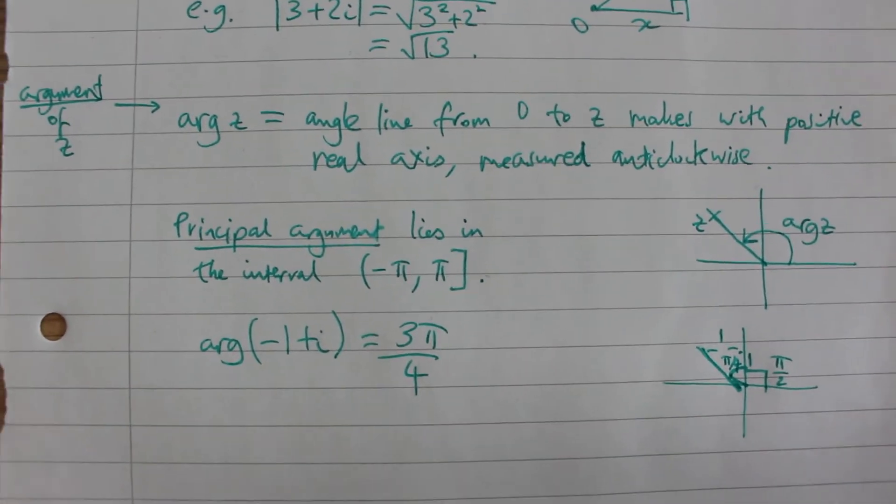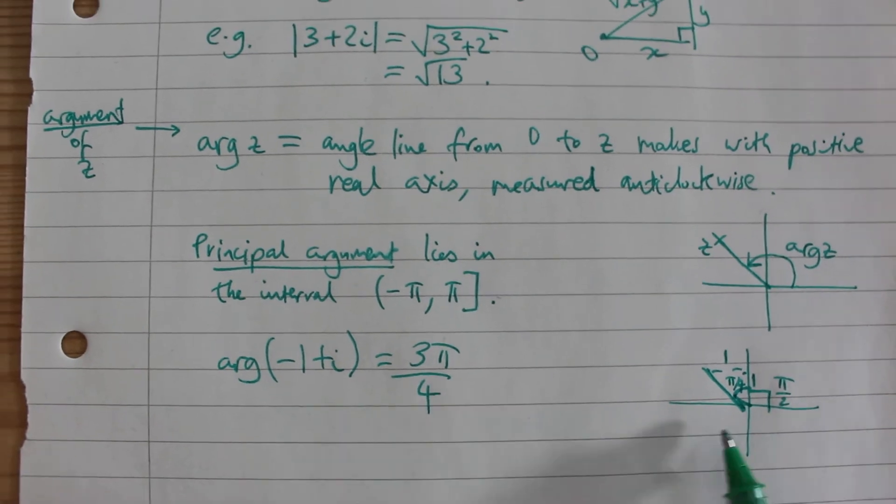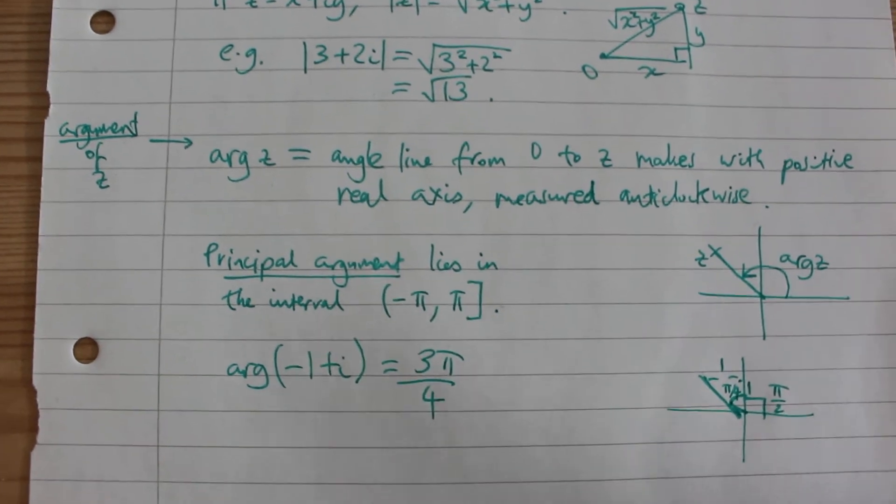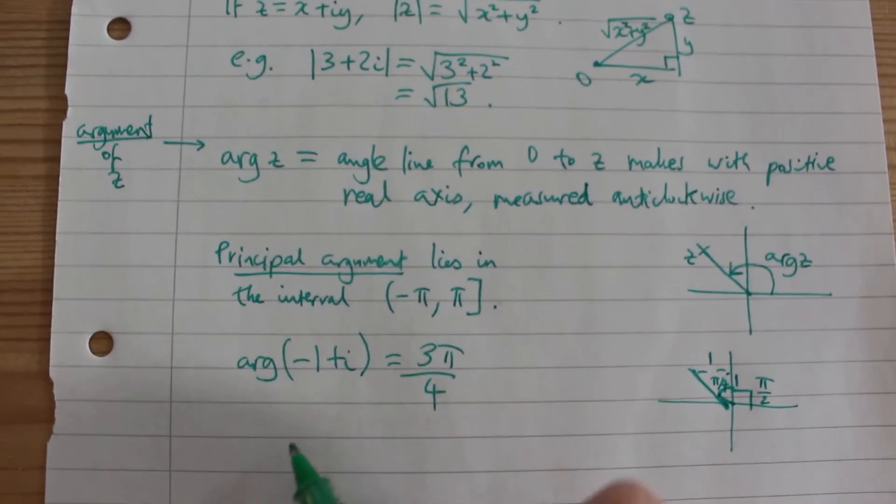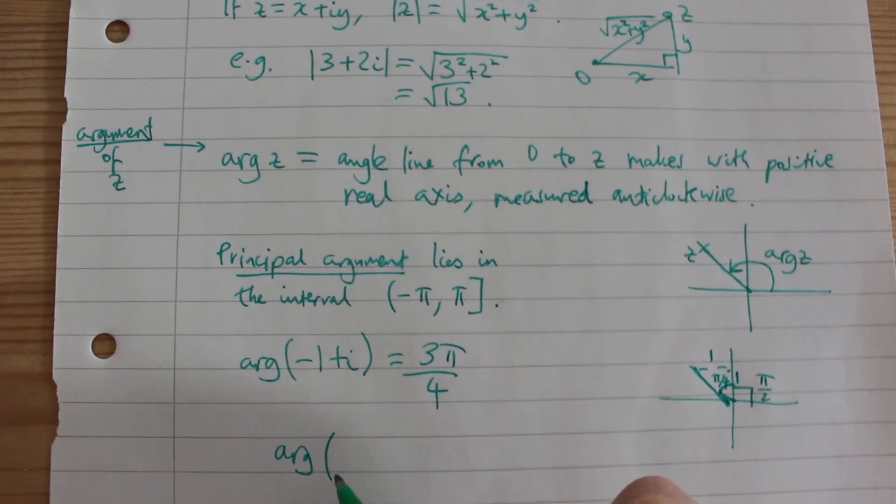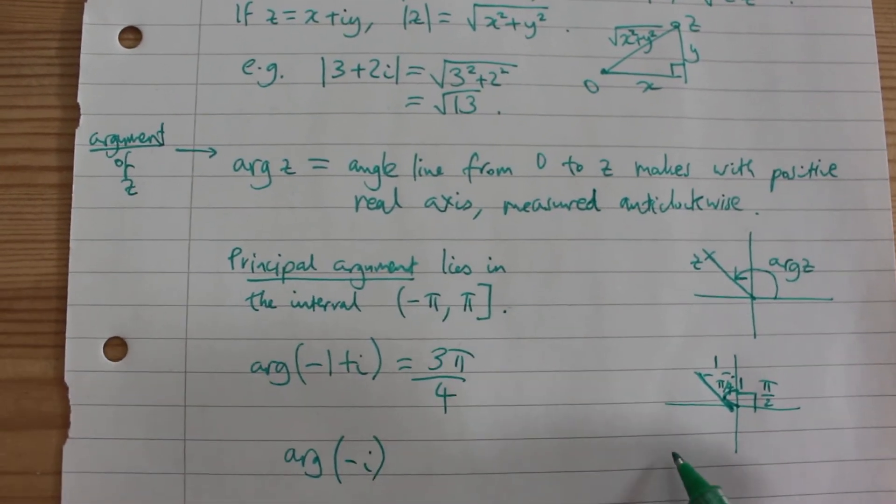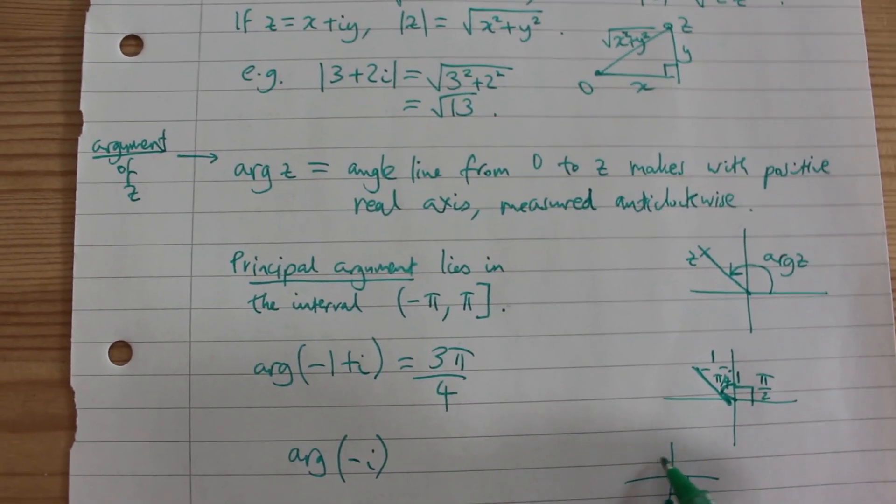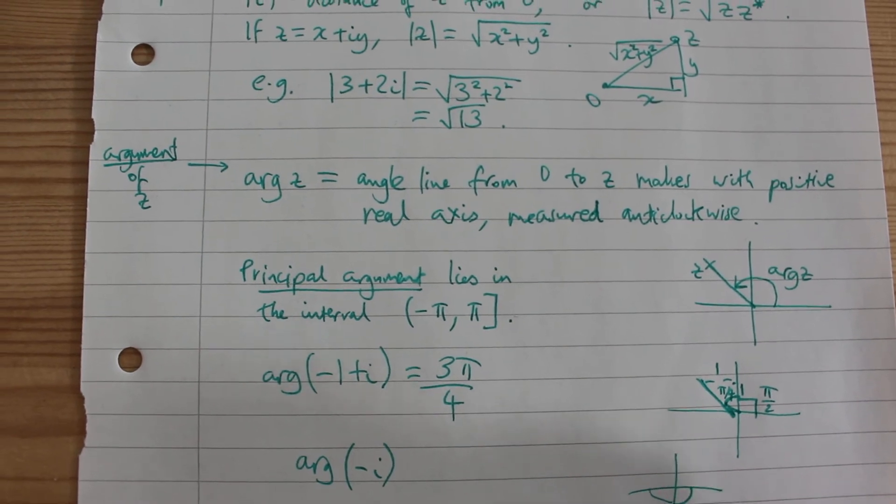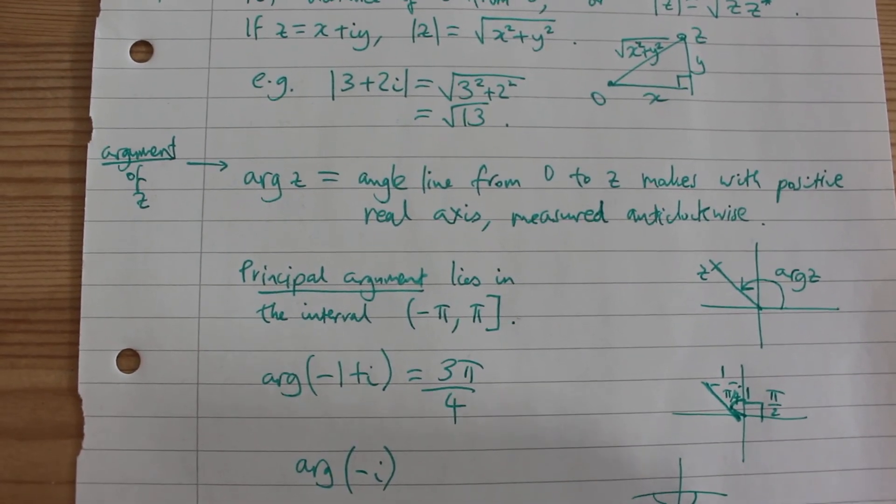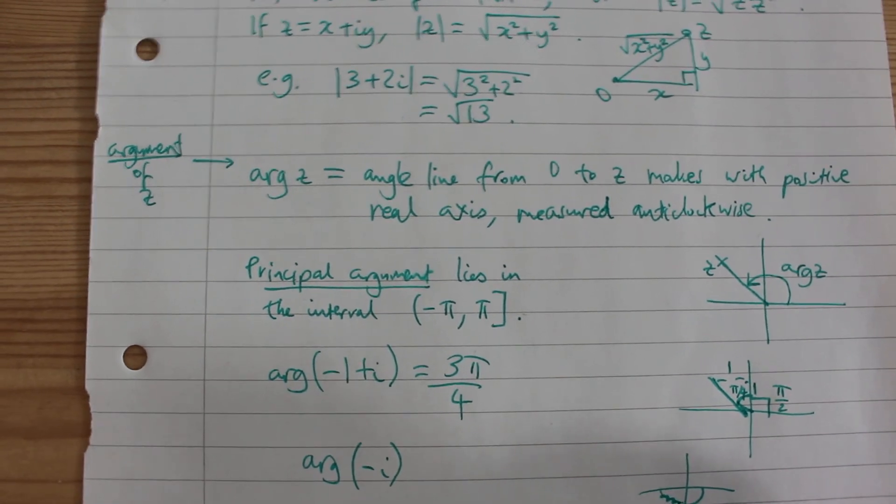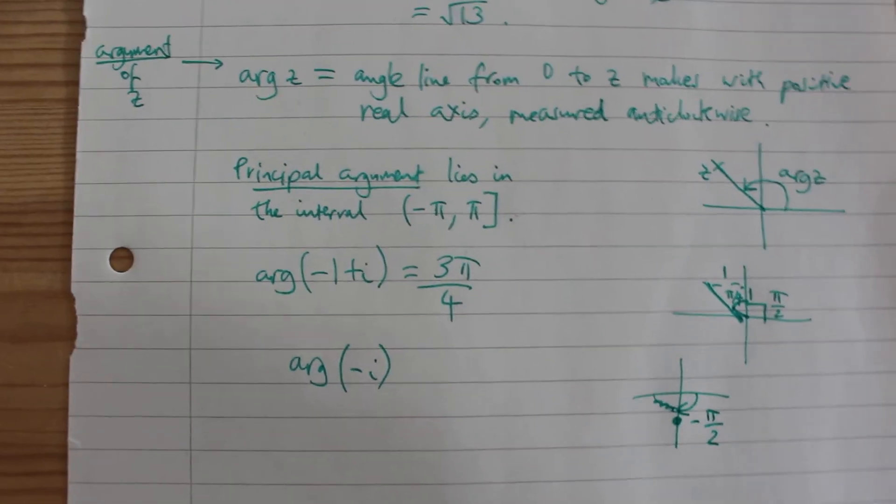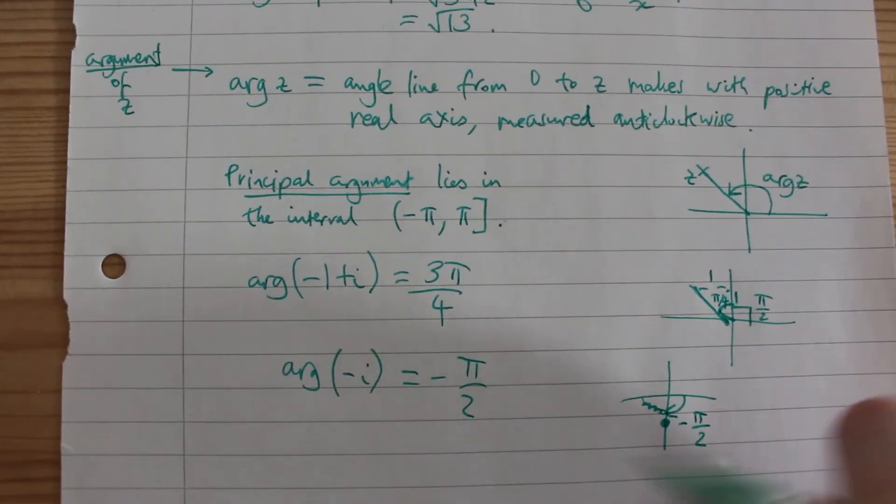So you have to be careful if you need the principal argument and you're in one of the bottom two quadrants. You might want to go back and measure clockwise and make your angle negative. So for example the principal argument of minus i, minus i would be here. We would go round anti-clockwise and get 3 pi by 2, but if we want the principal argument we need to go this way and it's going to be minus pi by 2.